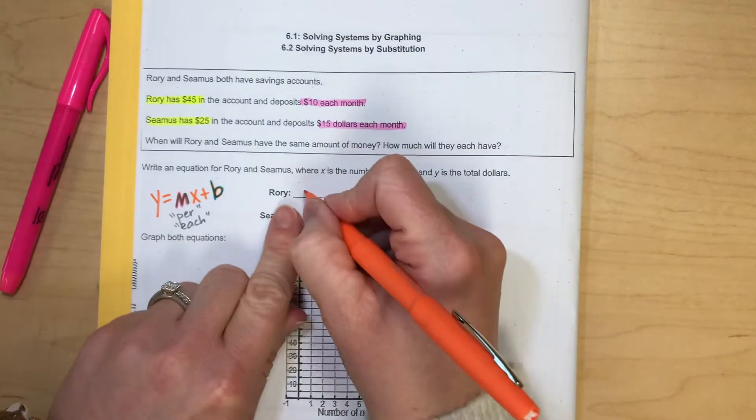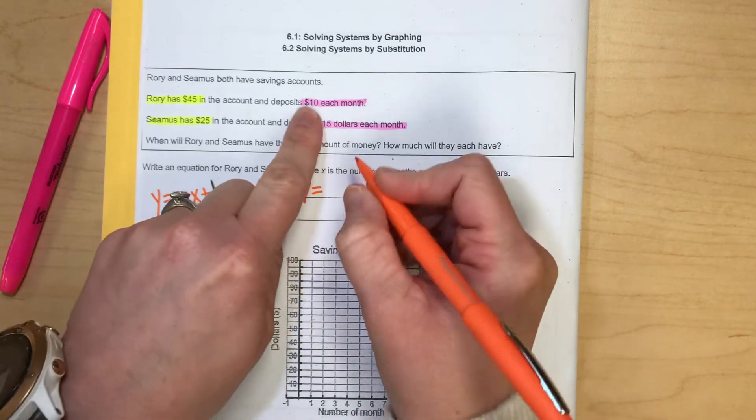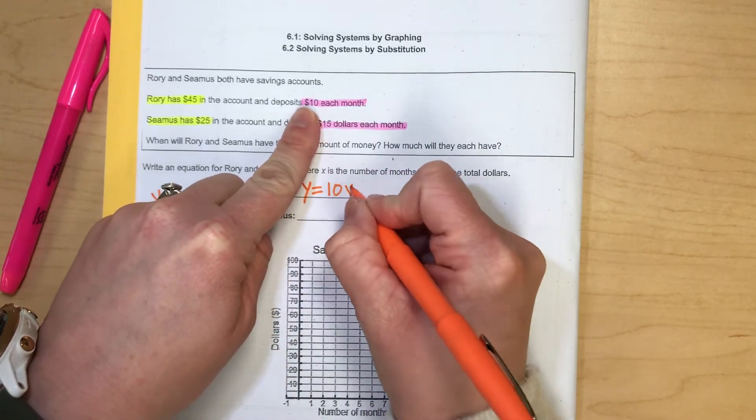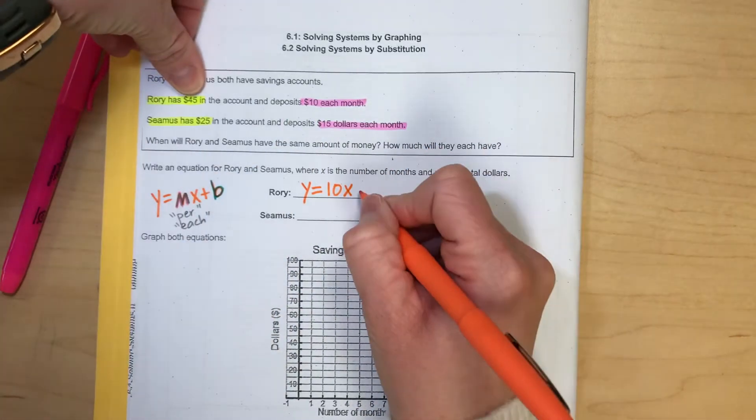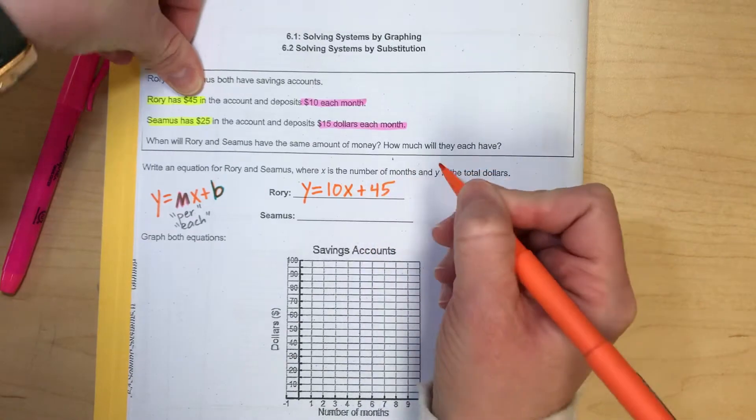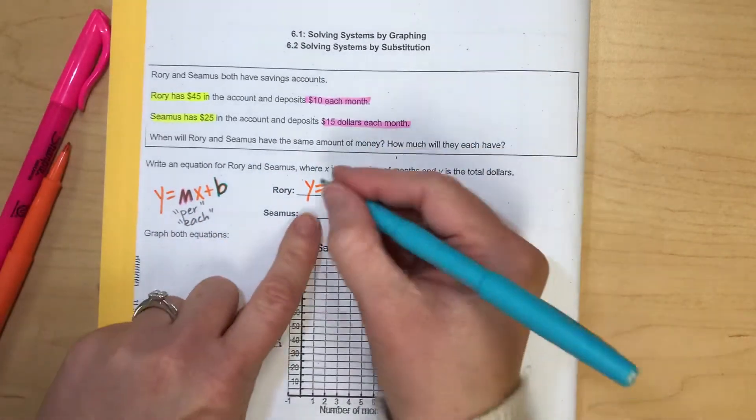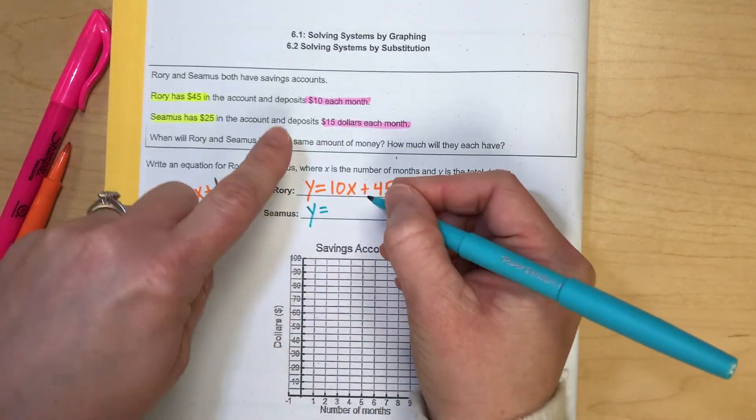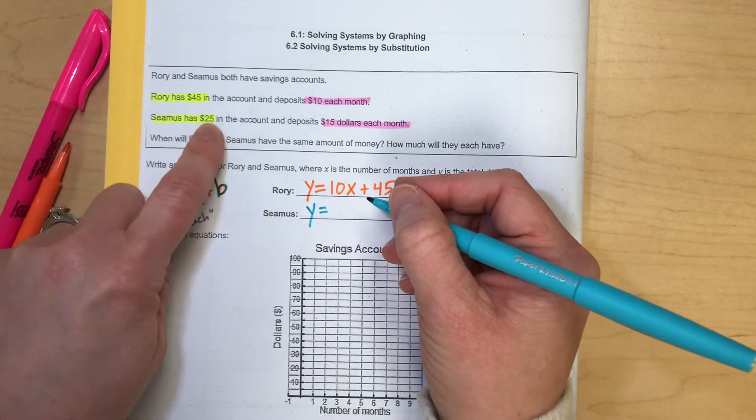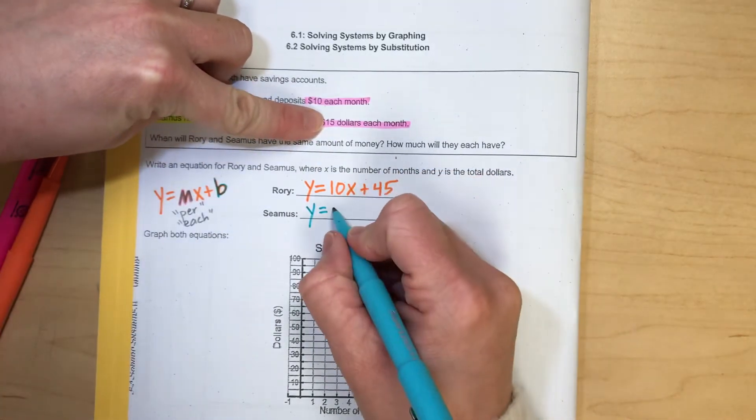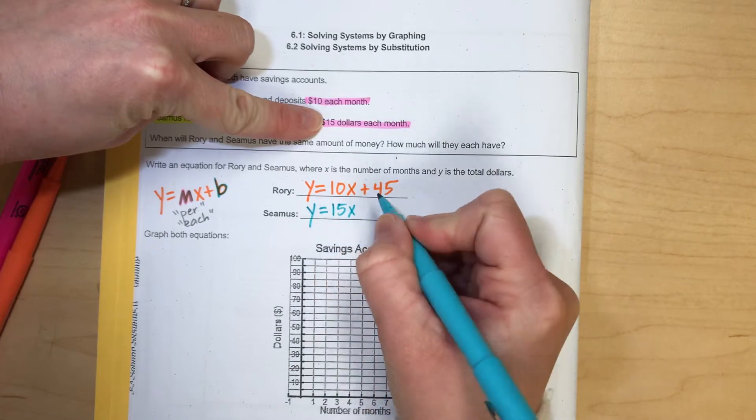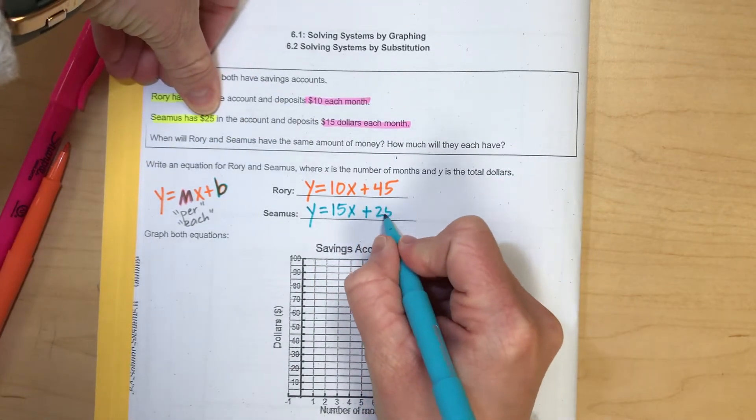Now let's build our two equations. For Rory, Y equals $10 per month, so that's my slope. And he started with $45. So Y equals 10X plus 45. And then for Seamus, Y equals 15X, that's $15 per month savings, and he started with $25.